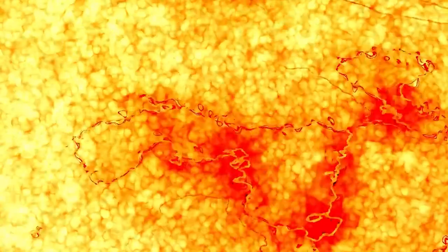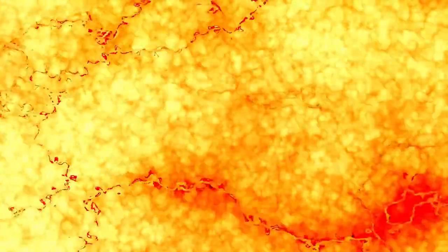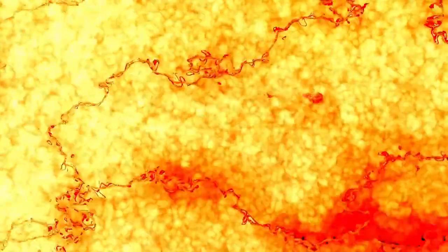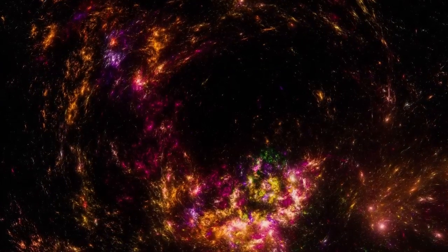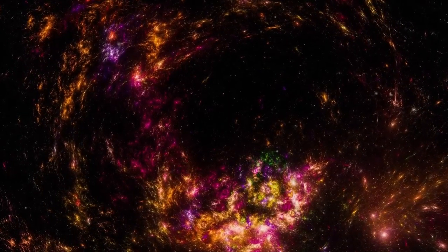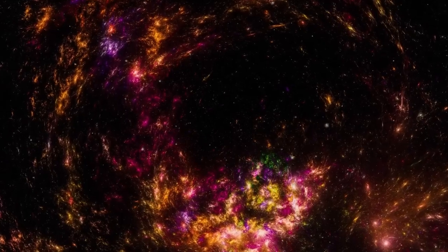Virgo, in turn, is part of a larger supercluster known as Laniakea, which contains approximately 100,000 galaxies. Each of these 100,000 galaxies has hundreds of billions of stars and planets of its own, and this is only a small part of the picture.